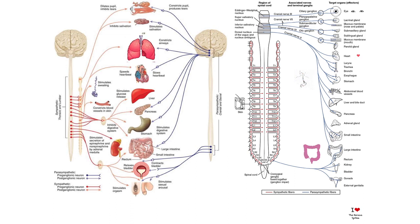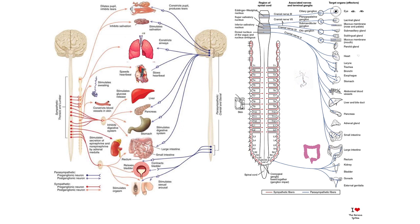Ce schéma résume l'ensemble des connexions anatomiques de ce système nerveux autonome, réparti en systèmes sympathiques et parasympathiques. Tous les organes — les poumons, le cœur, le foie, le pancréas, l'estomac, le côlon, la vessie — sont dépendants de ce système nerveux végétatif avec cette dualité d'innervation sympathique et parasympathique. Dès lors qu'il y a un dérèglement, on peut avoir une altération de la continence ou de la phase mictionnelle.